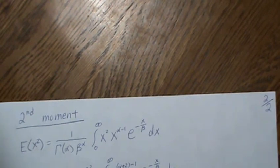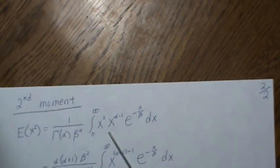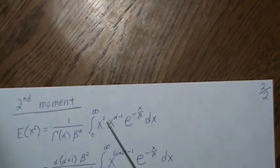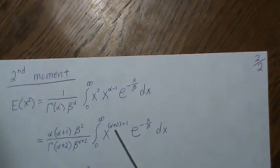Now let's look at the second moment, which is defined as the expected value of X squared. So we stick in an X squared here, and then we bring those two together so alpha plus 2 minus 1.